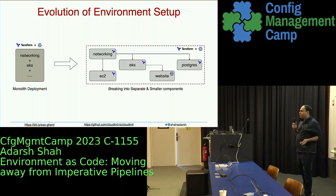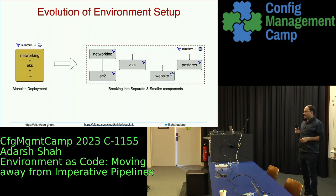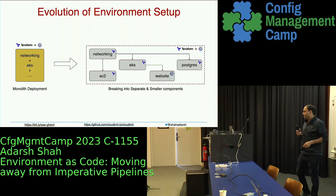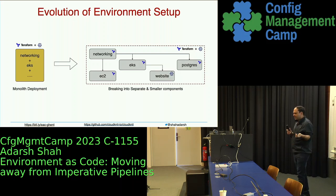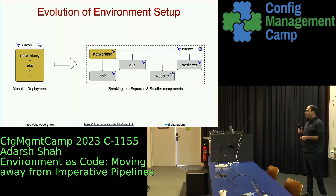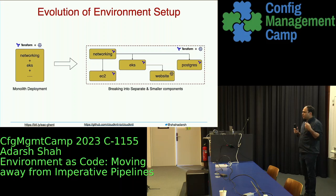Here's a typical evolution of an environment setup. You typically get started with a monolith deployment. If you're writing Terraform, you might have a monolith Terraform that provisions everything you want. You don't have to create various modules or break them into components. Same for application deployments — you might have a monolith app you just deploy. But as time goes, you start breaking that into multiple pieces because your use cases get more complex and you want better control over things.